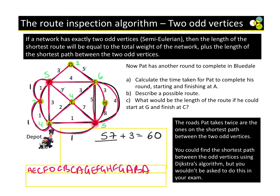Part C: what would be the length of the route if you could start at G and finish at C? Since G and C are a pair of odd vertices, the route is just the total weight of the graph — it's semi-Eulerian, so the total weight would be 57. To find the shortest path between odd vertices you can use common sense or Dijkstra's algorithm.